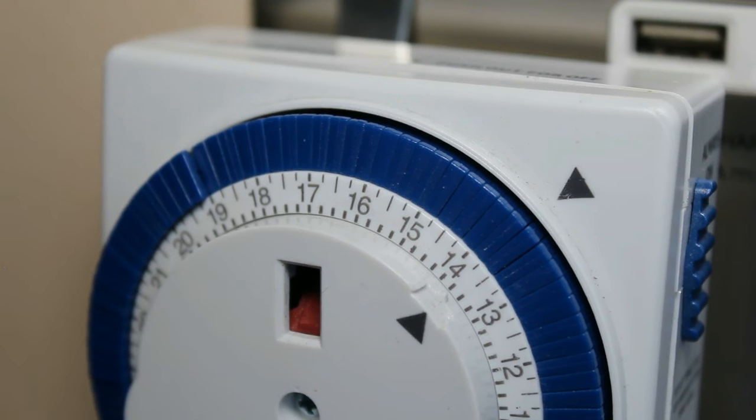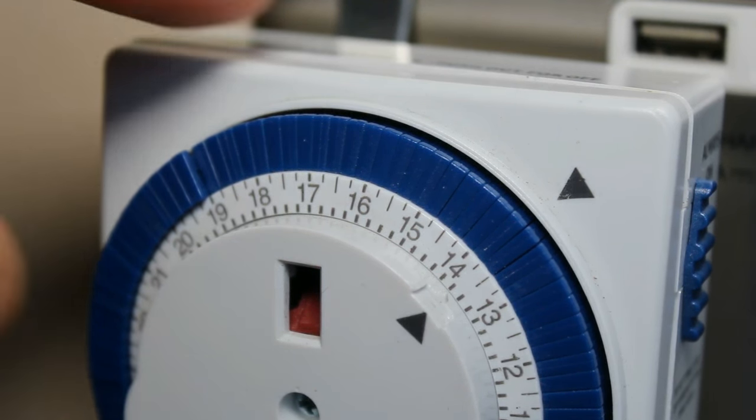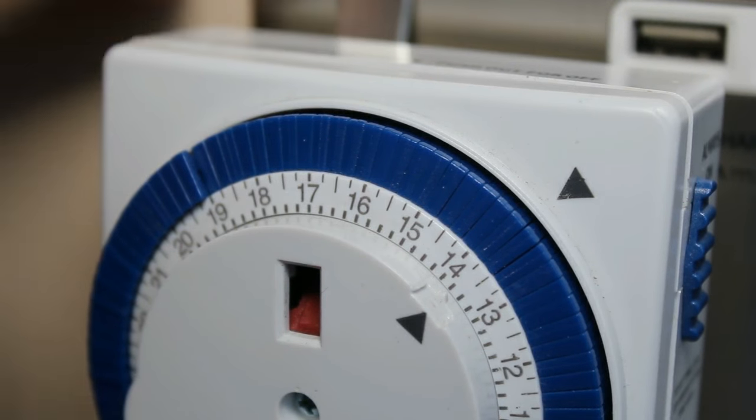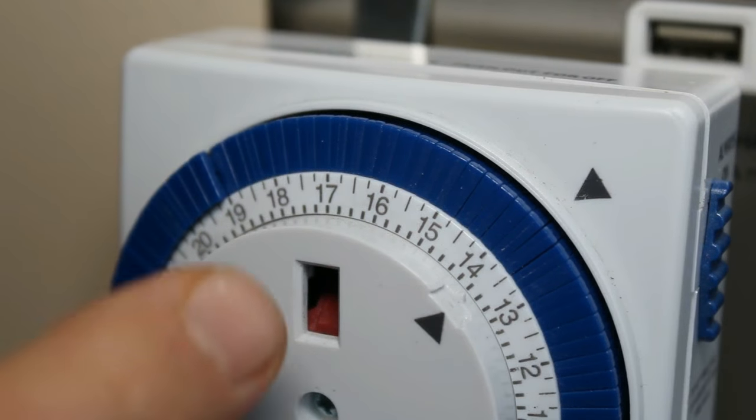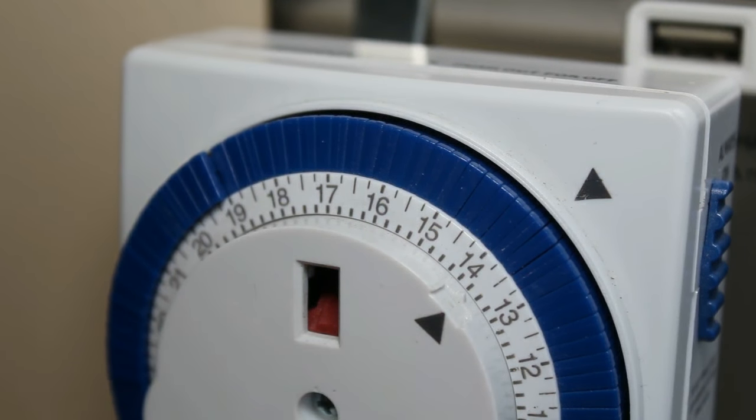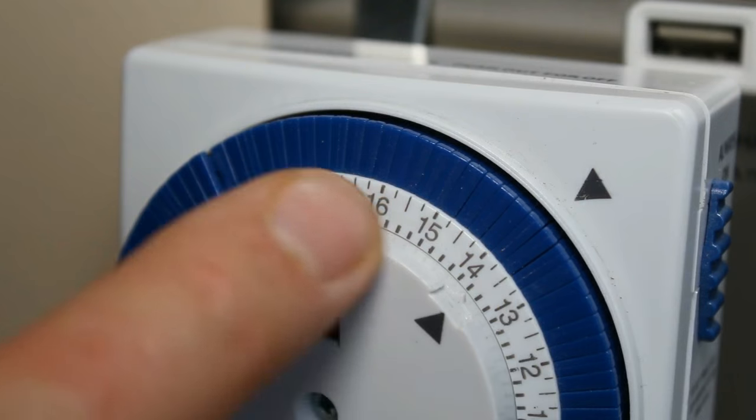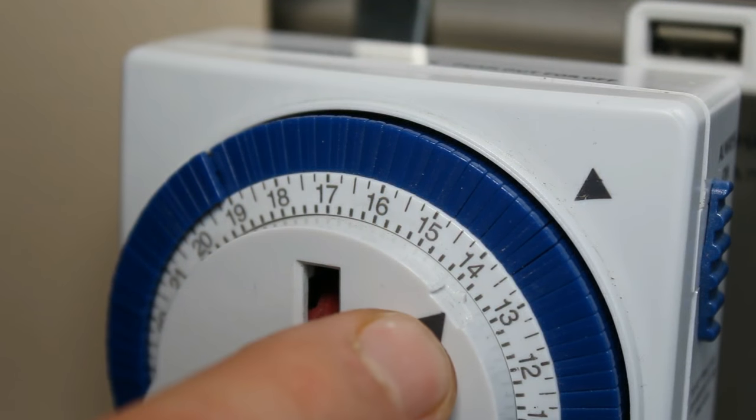So how do we set the timer so the appliance comes on and off when we want it to? First things first, if the timer switch is plugged in the wall like this one, make sure that the socket is turned off because otherwise you may damage it while you're turning it. The clock is represented in 24 hour format by all those numbers around. That arrow here indicates the time that it is now.